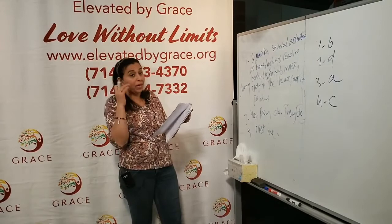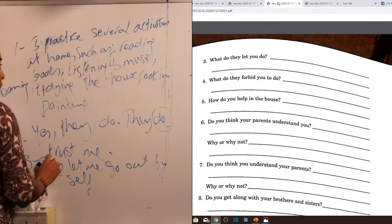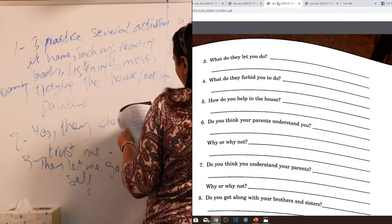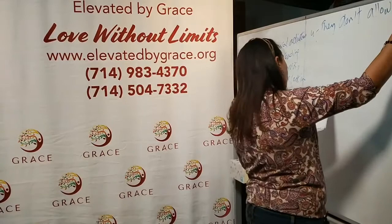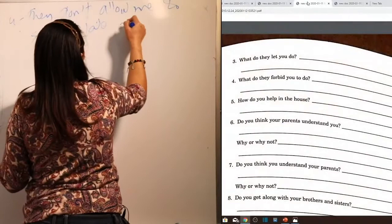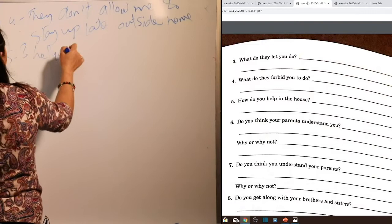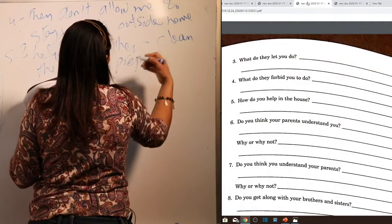Question three: 'What do they let you do?' Answer: 'They let me go out by myself.' Question four: 'What do they forbid you to do?' We can also say 'They don't allow me to stay up late outside — I have to be home by nine at the latest.' Question five: 'How do you help in the house?' Answer: 'I help my mother clean the house and prepare meals — lunch and dinner.'